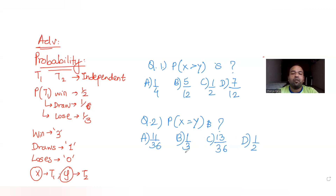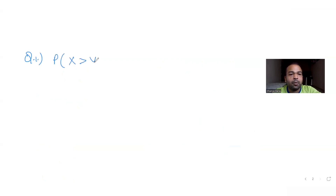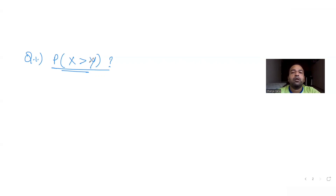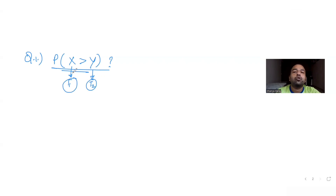Now let's understand the setup: probability of team 1 winning is 1/2, drawing is 1/6, and losing — which is the same as team 2 winning — is 1/3. For the first question, we need to find the probability that X is greater than Y, meaning team 1 scores more total points than team 2 across the two matches.